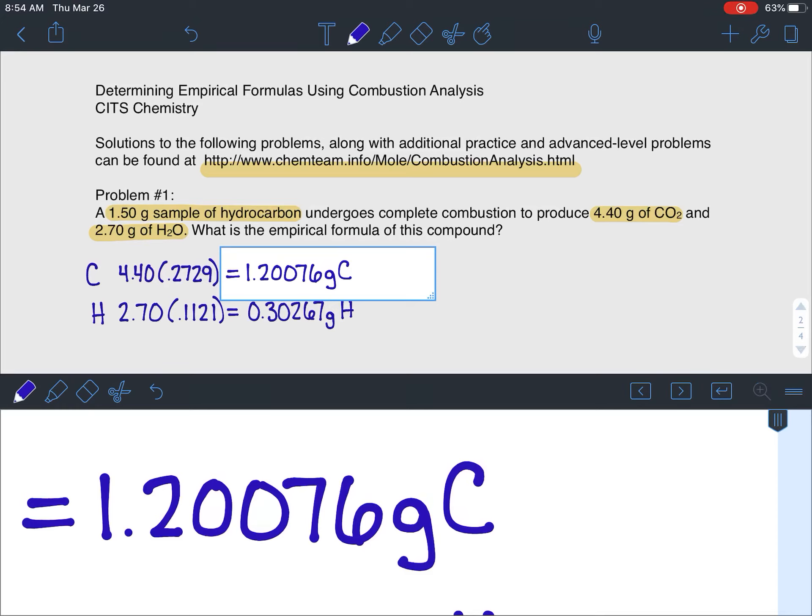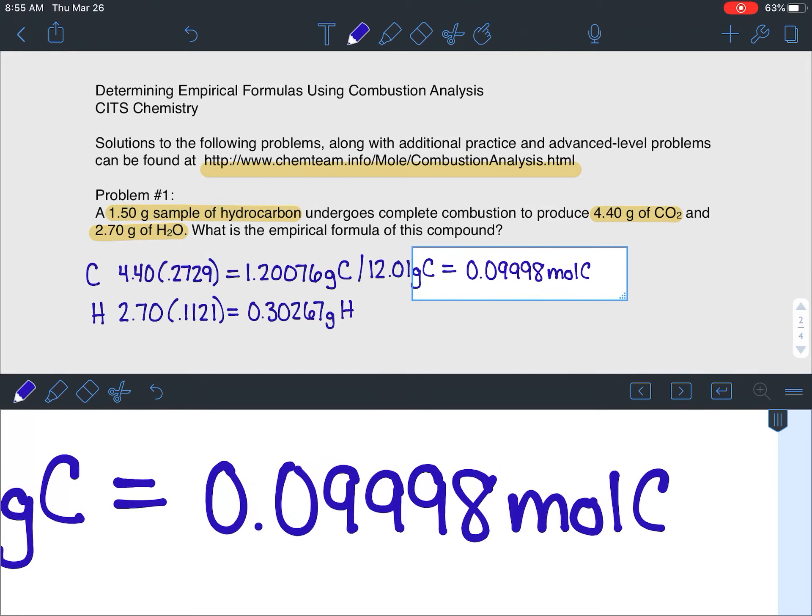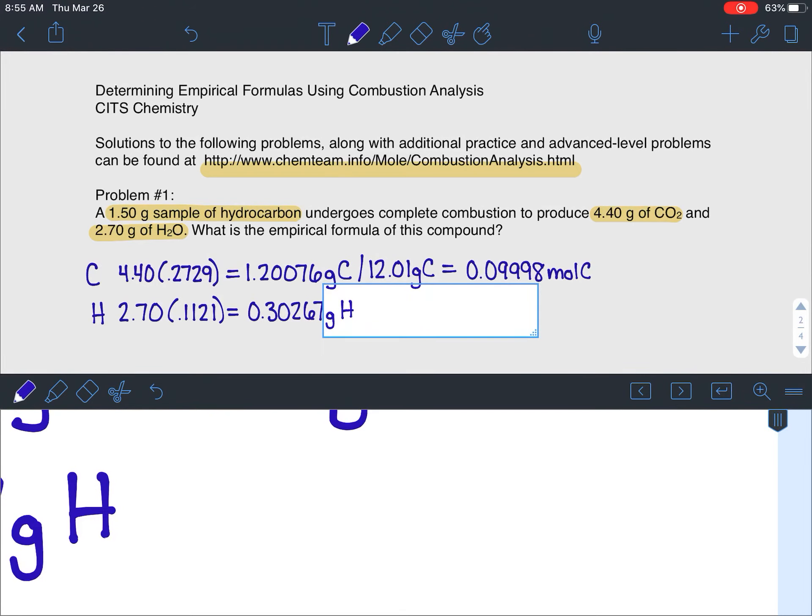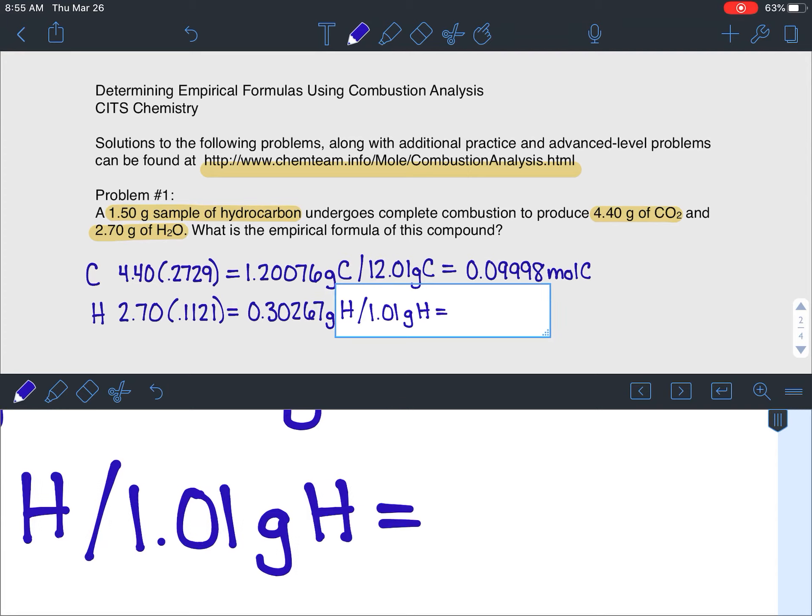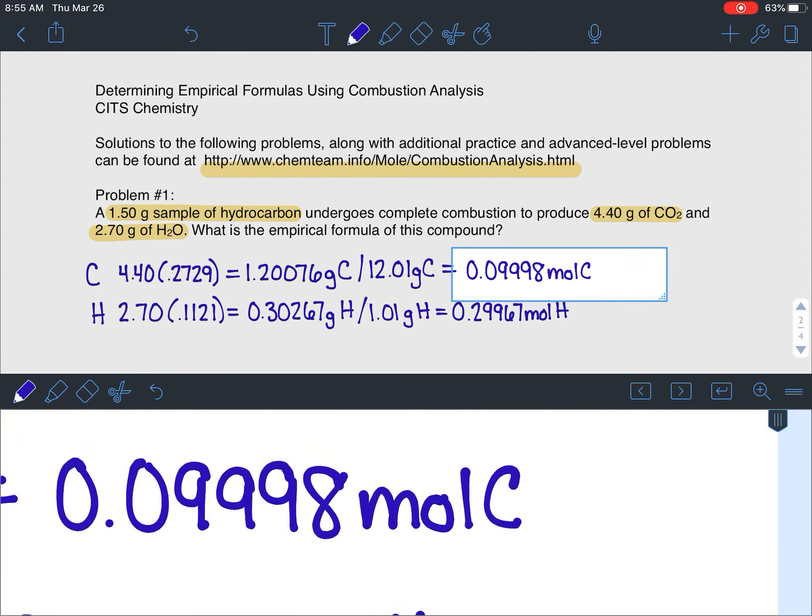Next step, I know now I have grams of everything. So now I'm going to divide by the molar mass of each of these to get how many moles I have. So I get 0.09998 moles of carbon. And then I'm going to divide by 1.01. I'm going to get 0.29967.